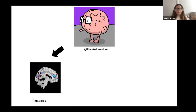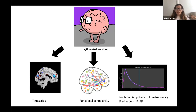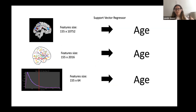So I used: time series — basically the activity in different voxels of the brain over time; functional connectivity; and fractional amplitude of low-frequency fluctuation, or fALFF — basically the ratio of low to high frequency activity during resting state. Those were the three different modalities I started working with. The idea was to build one model per modality, and also a fourth model that would combine all modalities together.